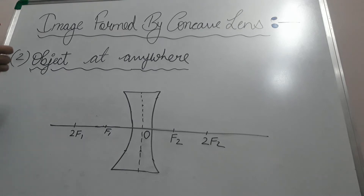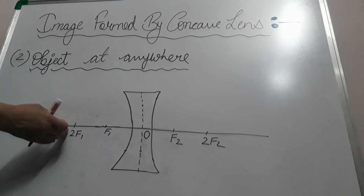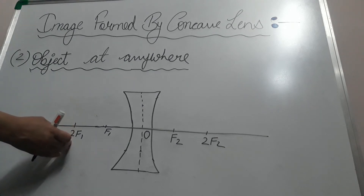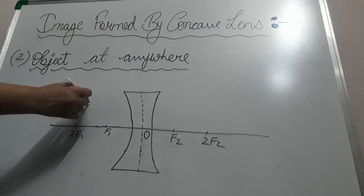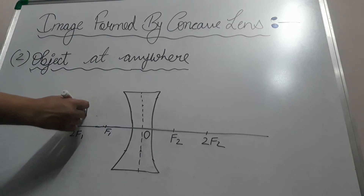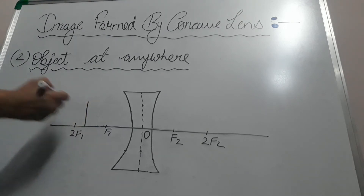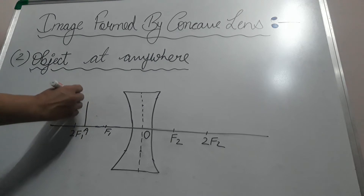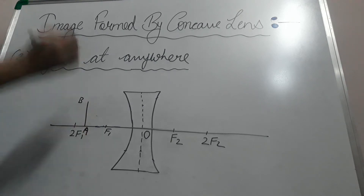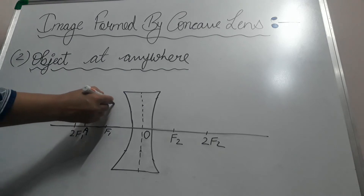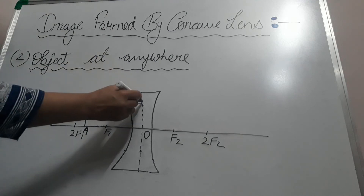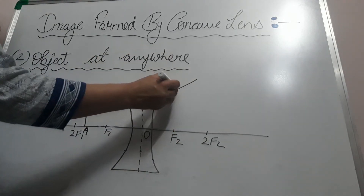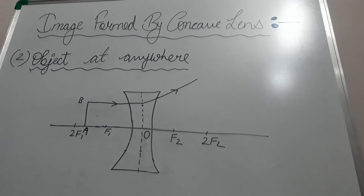Now the second situation: the object is situated anywhere. It can be beyond 2F1, or between 2F1 and F1. Suppose the object is situated between F1 and 2F1 — this is object AB. First, a ray comes parallel to the principal axis. Since it is a diverging lens it will diverge and will not go through F2, it diverges in that direction.